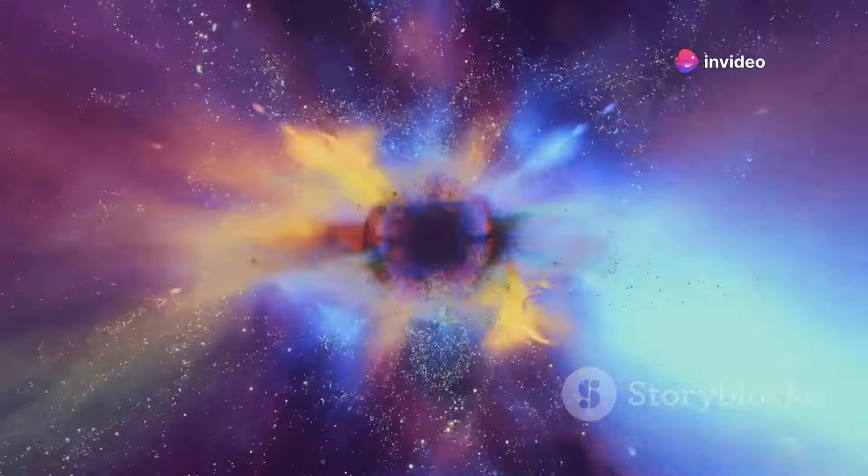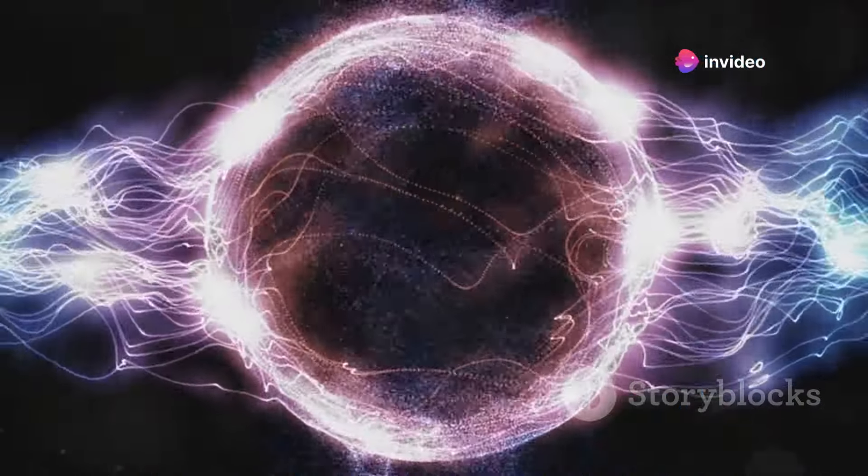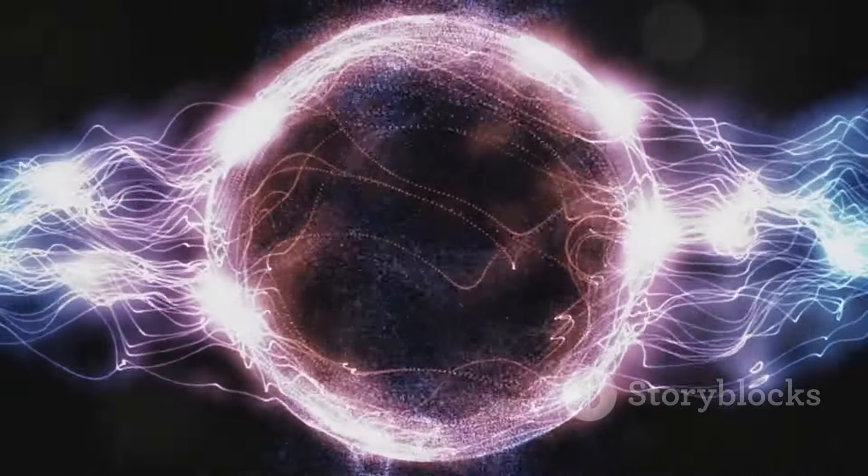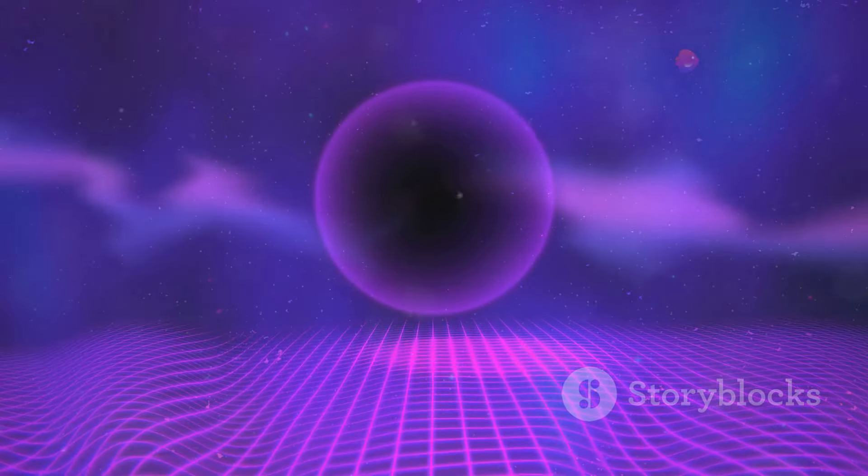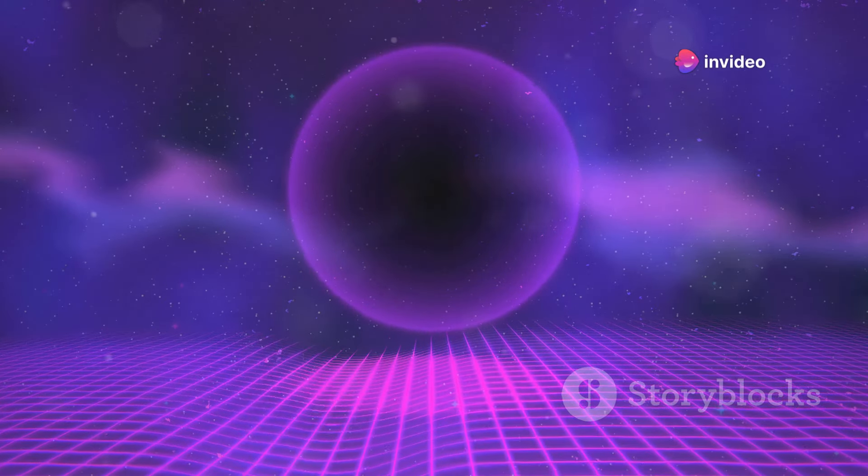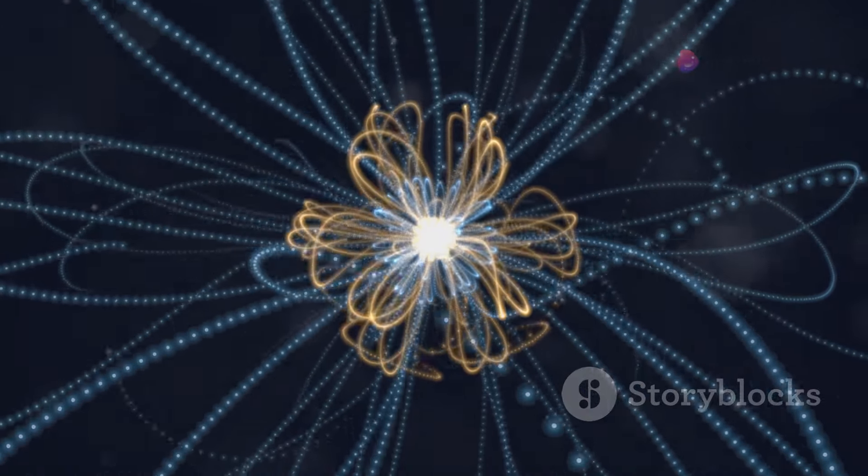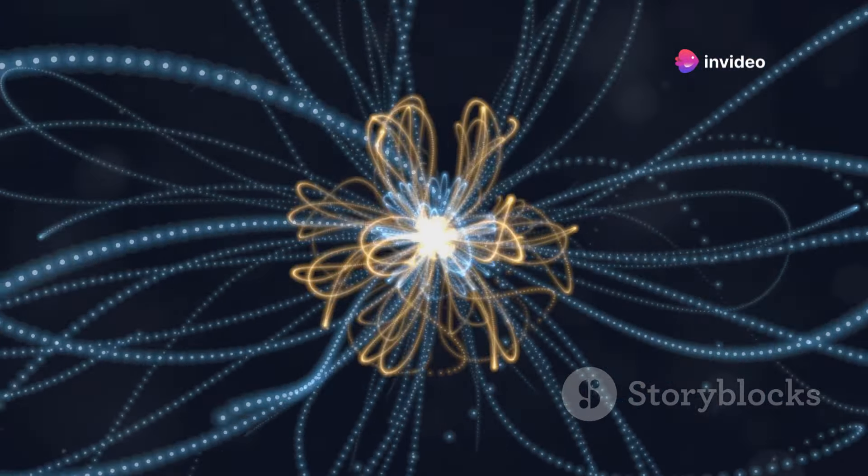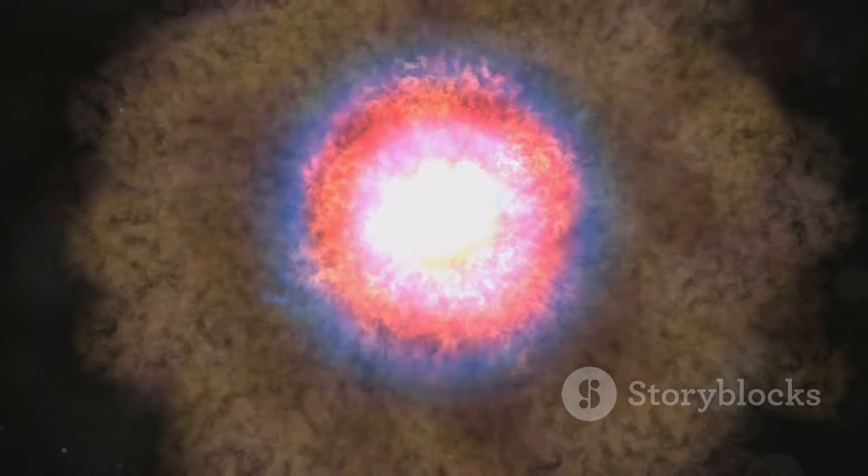Quantum fields are the fundamental entities that underpin our understanding of the universe at the smallest scales. Don't worry, it's not as complicated as it sounds. Think of quantum fields as the invisible threads that weave the tapestry of the cosmos. Imagine quantum fields as invisible grids that permeate all of space. These grids are everywhere, filling the void with their unseen presence. These grids determine the properties of fundamental particles, like electrons and quarks. They dictate how these particles behave and interact with one another. Now here's where things get interesting. Quantum fields aren't static. They can fluctuate and change in ways that are both fascinating and potentially dangerous.